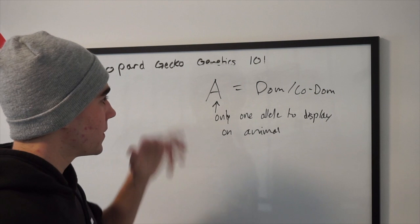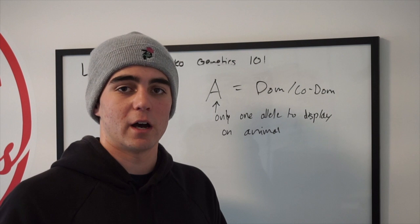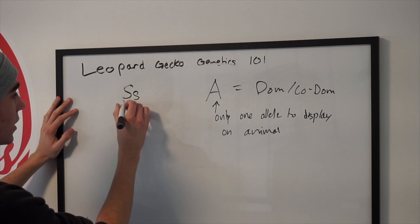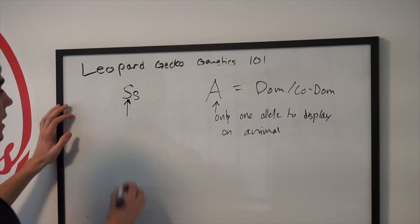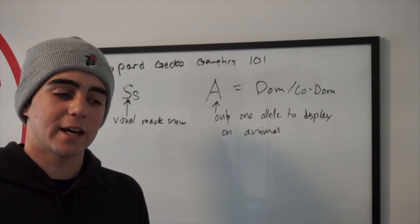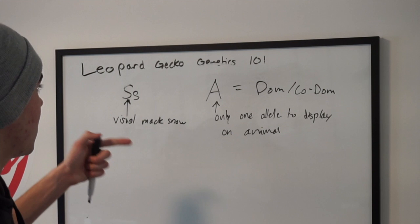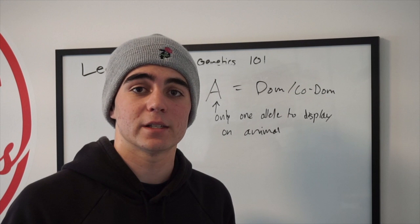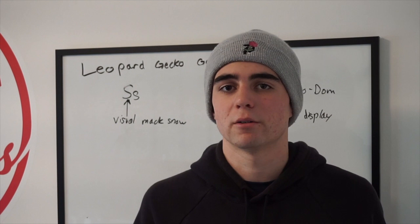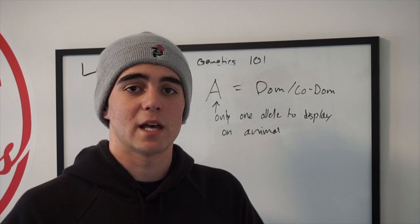It only needs that one allele to display on the animal. So let's take a co-dominant gene for example — max snow. We'll use S's. A max snow only needs this one capital S to display, so it would be a visual max snow — you could just tell by looking at it. If an animal doesn't look like it has any dominant or co-dominant genes, then it simply doesn't. You can tell immediately if it has max snow, super snow, gem snow, enigma, or any of those white and yellow morphs just by looking at them.